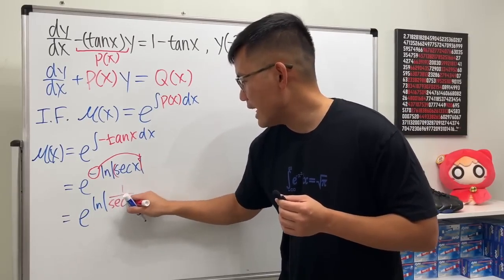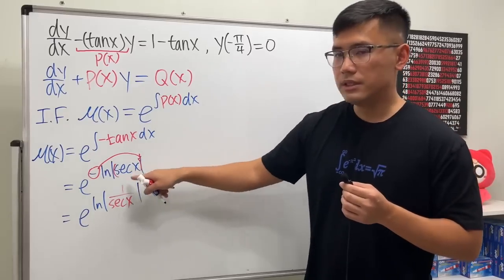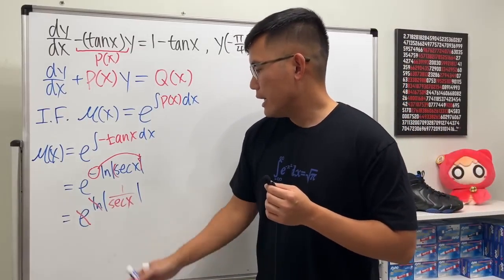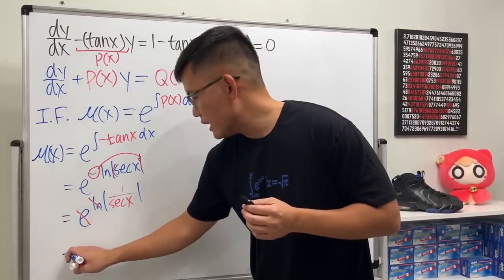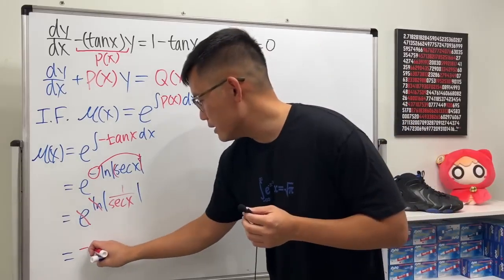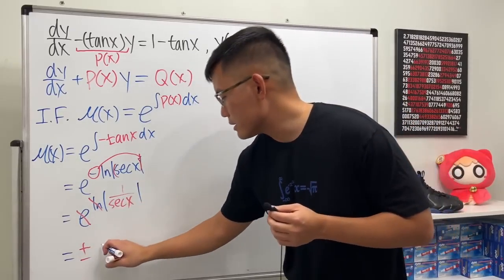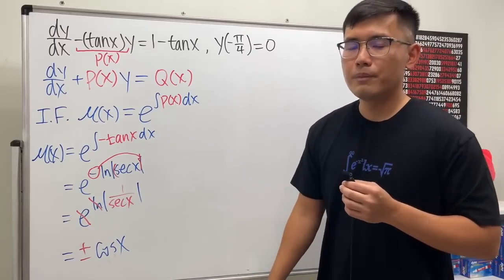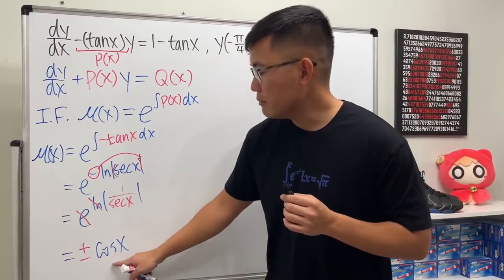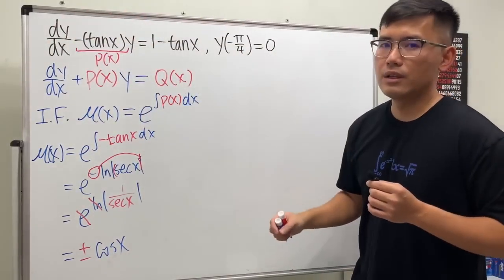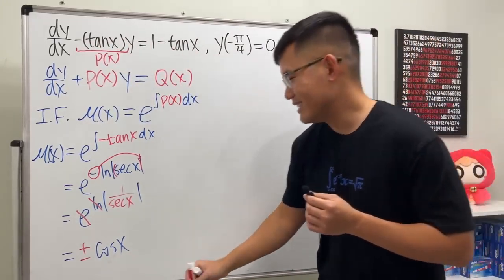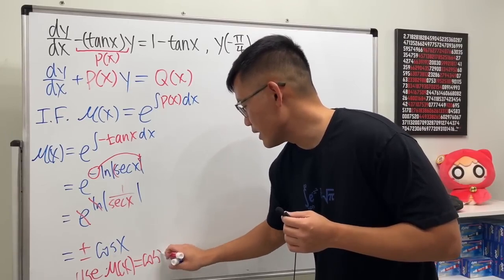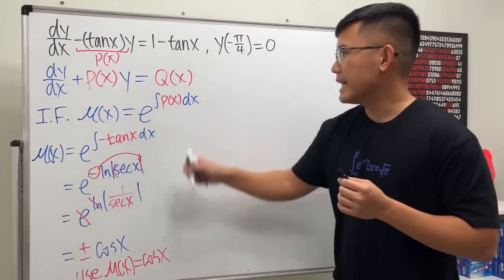Now we can cancel out e and ln, giving us the absolute value of one over secant x. We take off the absolute value and consider plus or minus — and since 1 over secant x is cosine x, we just use the positive version. So mu(x) equals cosine x.